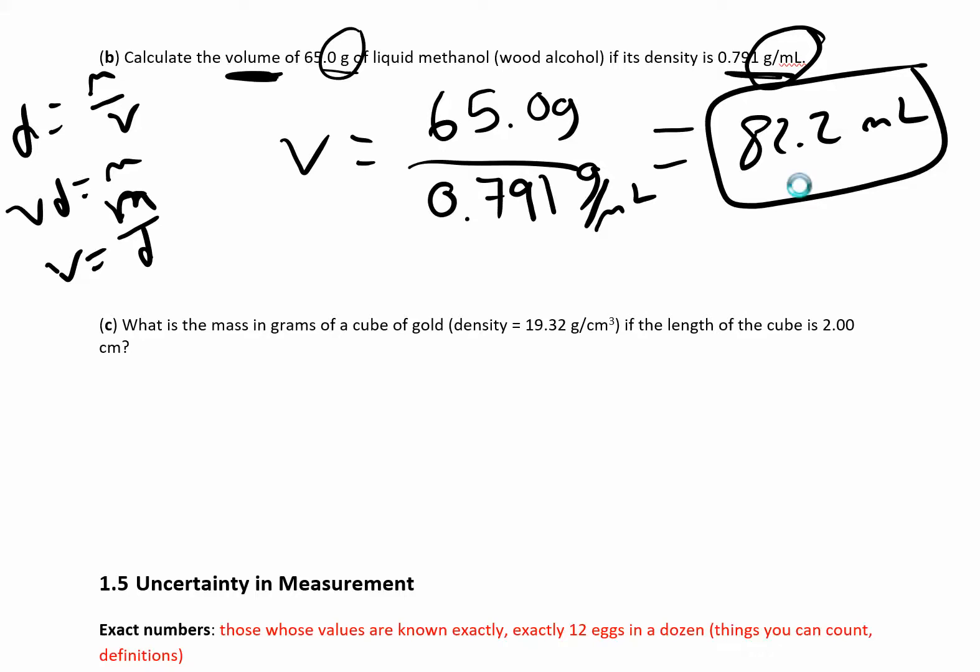Oh, and also look at these units. So if you had gram divided by grams over milliliters, you basically have 1 over 1 over milliliters, which gives you a milliliter. Okay, last one in this section.